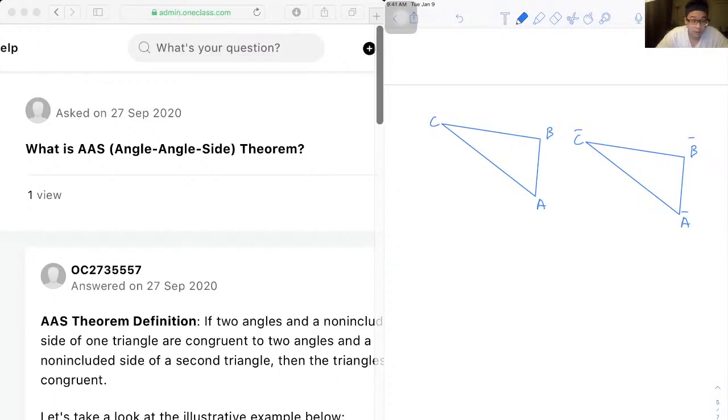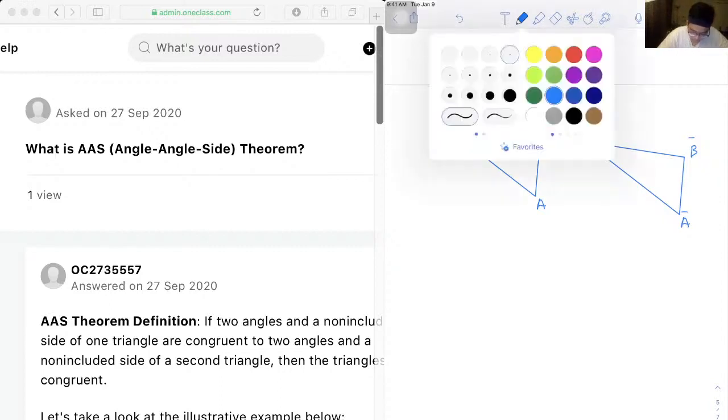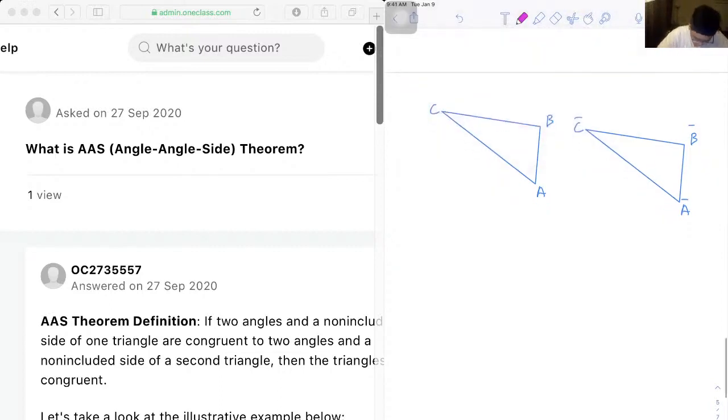Okay, so in the figure, segment AB and segment A bar B bar are non-included sides of the two triangles. So first, let's write that down. Segment AB